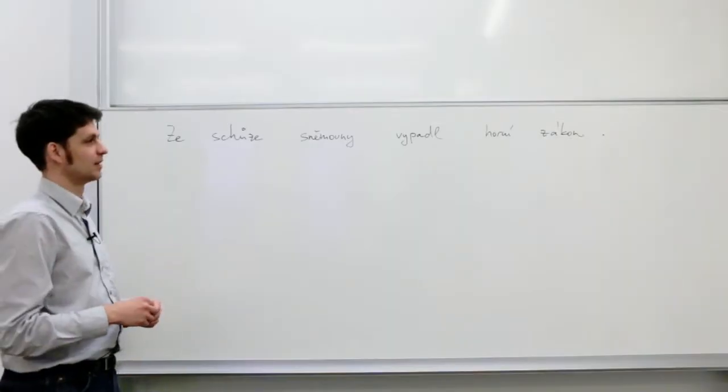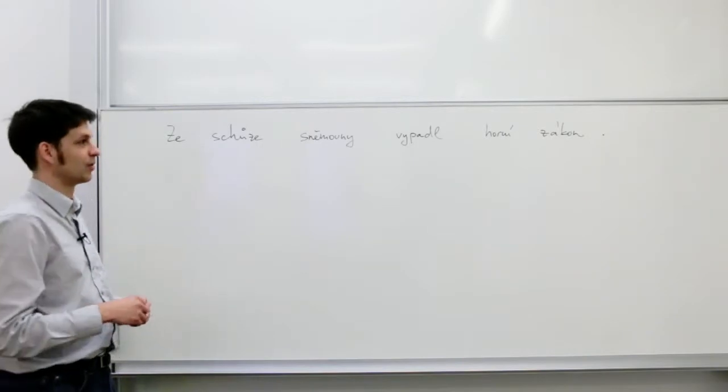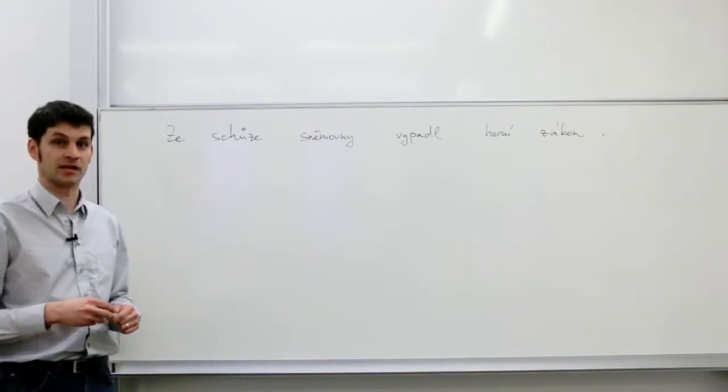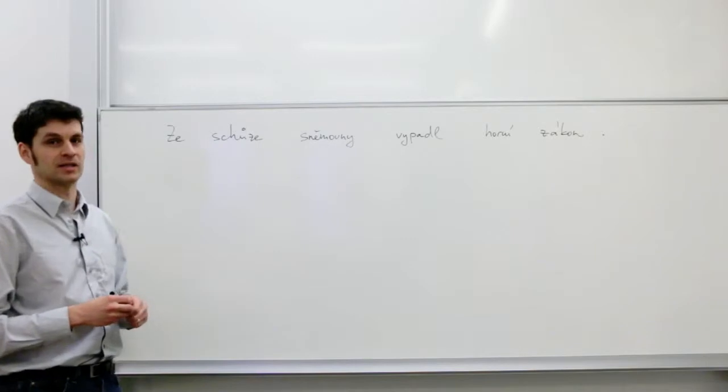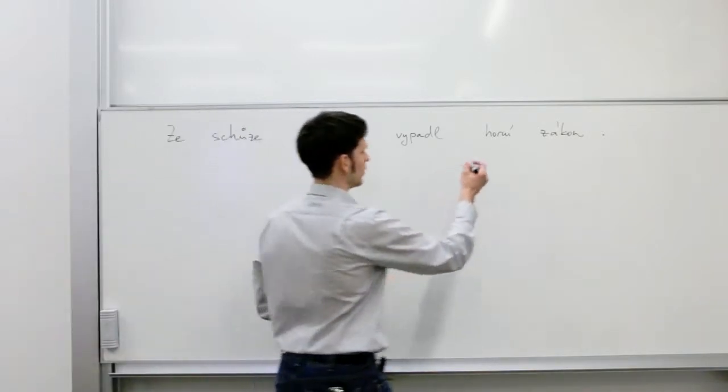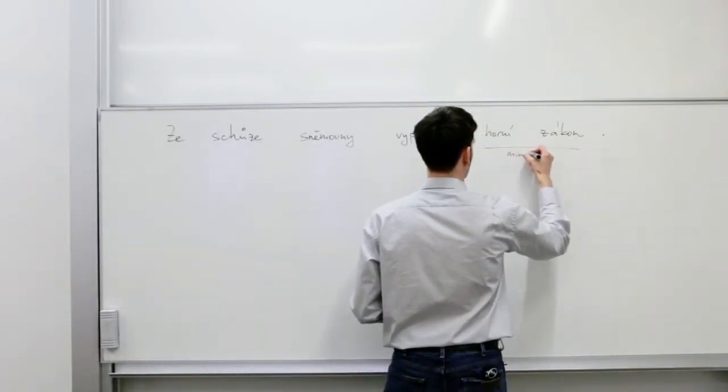Given a new sentence, the phrase-based model first considers all phrases it has seen in the training data that are applicable in this sentence. So we know that horní zákon can be translated as mining act.